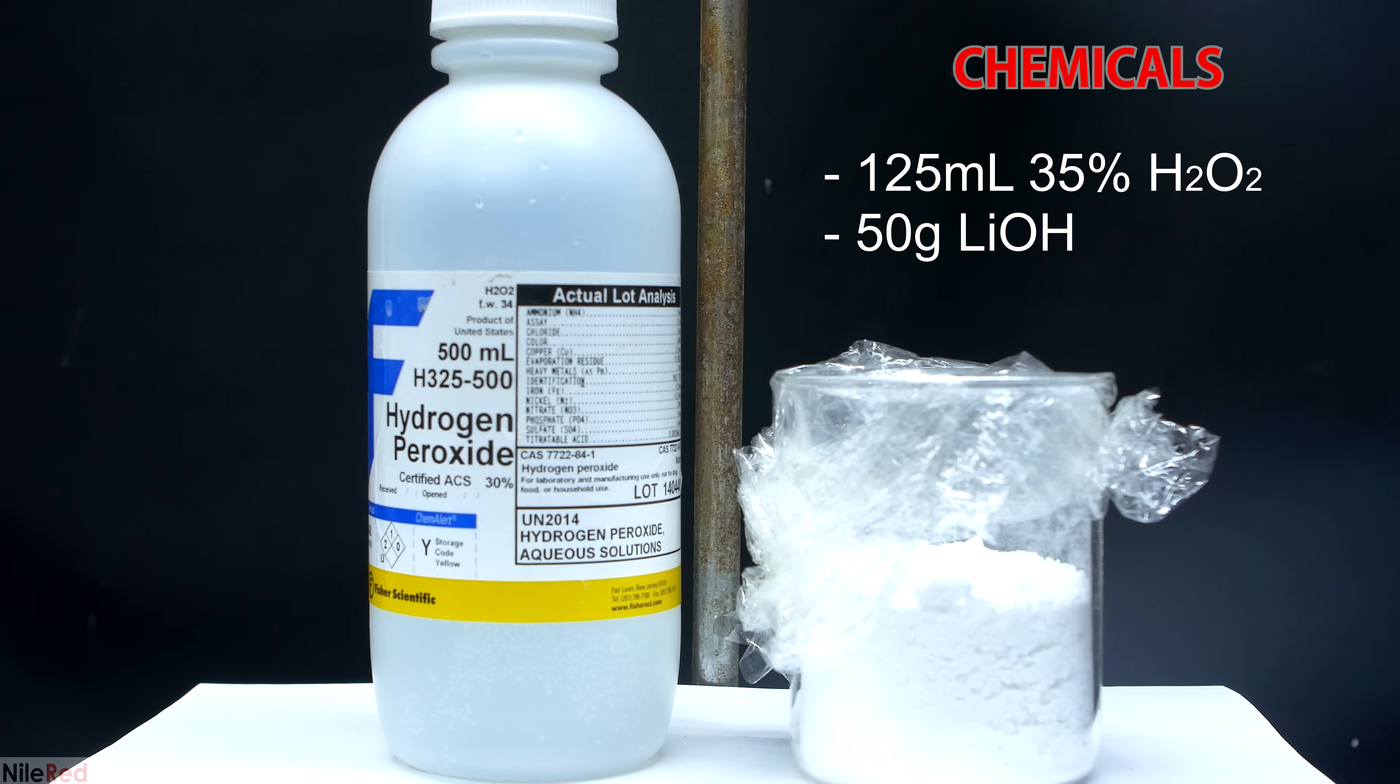To make the lithium peroxide, I used two main chemicals: 35% hydrogen peroxide and lithium hydroxide. The hydrogen peroxide was purchased from the store and the lithium hydroxide was made in a previous video starting from lithium metal. I honestly didn't really need to make it myself and it can be pretty easily purchased from eBay. The procedure that I'm following for this preparation is from a patent and I'll provide a link to it in the description.